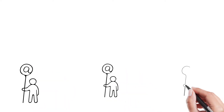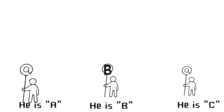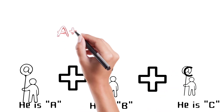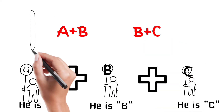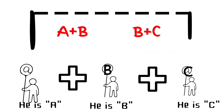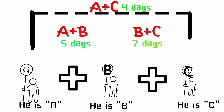Let's understand the question. Here there are three people: A, B, and C. The question says they are paired up: A plus B, B plus C, and A plus C. A plus B takes five days, B plus C takes seven days, and A plus C takes four days. If we add all three together, we get the total. After that, we subtract to find each individual person's time, and then we'll know who is more and who is less.